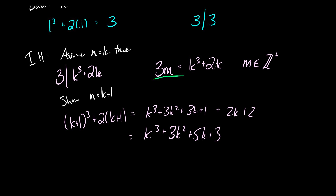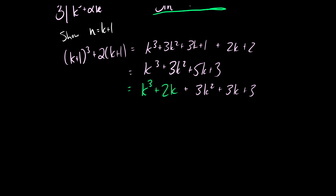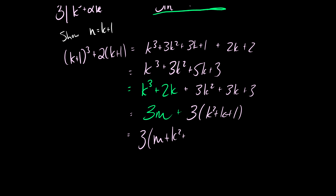But what do we know? We made the assumption that 3 times some number is equal to k cubed plus 2k. So let's pull out a k cubed plus 2k. So k cubed plus 2k, and then we have our remaining bits: 3k squared plus — we took 2k from 5k so we're left with 3k — and then we're left with 3. Good news! So now our k cubed plus 2k we said was equal to 3 times m, and with our remaining we can factor out a 3: it's going to be 3 times k squared plus k plus 1.